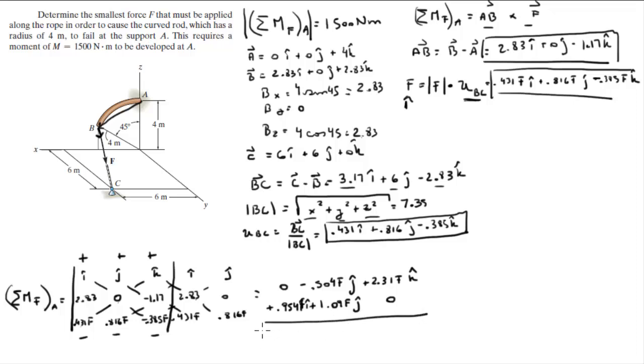So when you add them together you're going to get that the moment that F creates about A is given by 0.954F in the i plus 0.586F in the j plus 2.31F in the k.